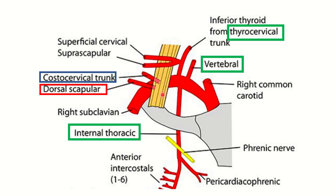The dividing muscle is the anterior scalene muscle. The second part is at the level of the anterior scalene, the first part is proximal to it, and the third part is distal. From the first part, three arteries arise: vertebral, internal thoracic, and thyrocervical — shown boxed in green. From the second part, the costocervical trunk arises.